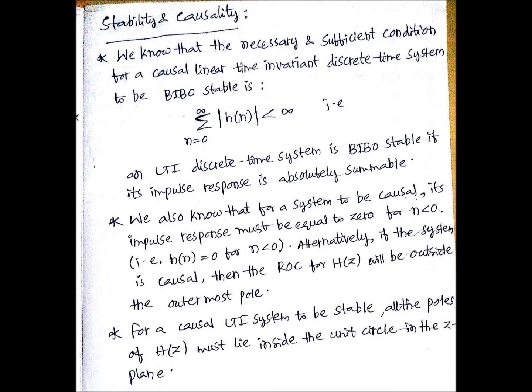Then for a causal LTI system to be stable - listen, I am mentioning a causal LTI system, it is not just an LTI system, it is also causal - suppose if a given LTI system is already mentioned as causal, then for that system to be stable, all the poles of h(z) must lie inside the unit circle in the z plane.